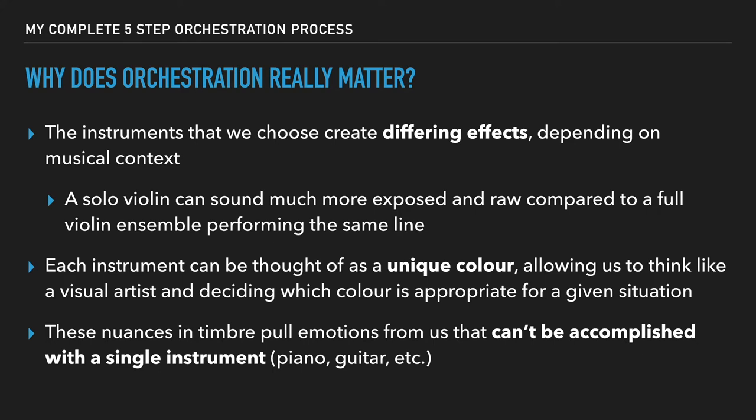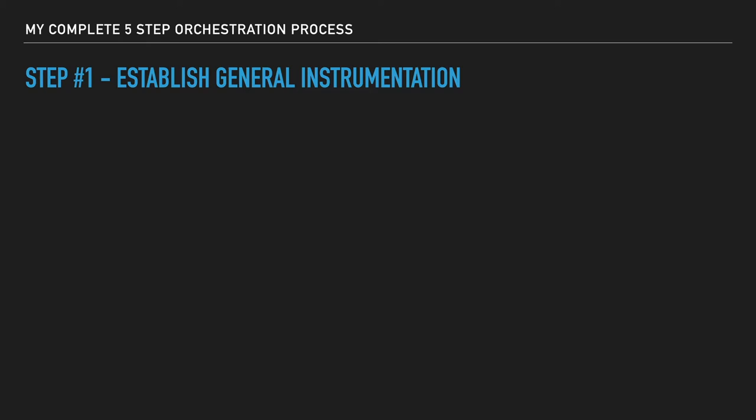These nuances in timbre pull emotions from us that can't be accomplished with a single instrument. This is why I love ensembles — like ensemble strings and ensemble woodwinds — they really just have that combined texture that sounds so beautiful in the right context. So step number one, let's get into the process, is to establish our general instrumentation. I've talked about how we should think about things from a more holistic overview perspective and then make our way down into the details, and this is no exception.